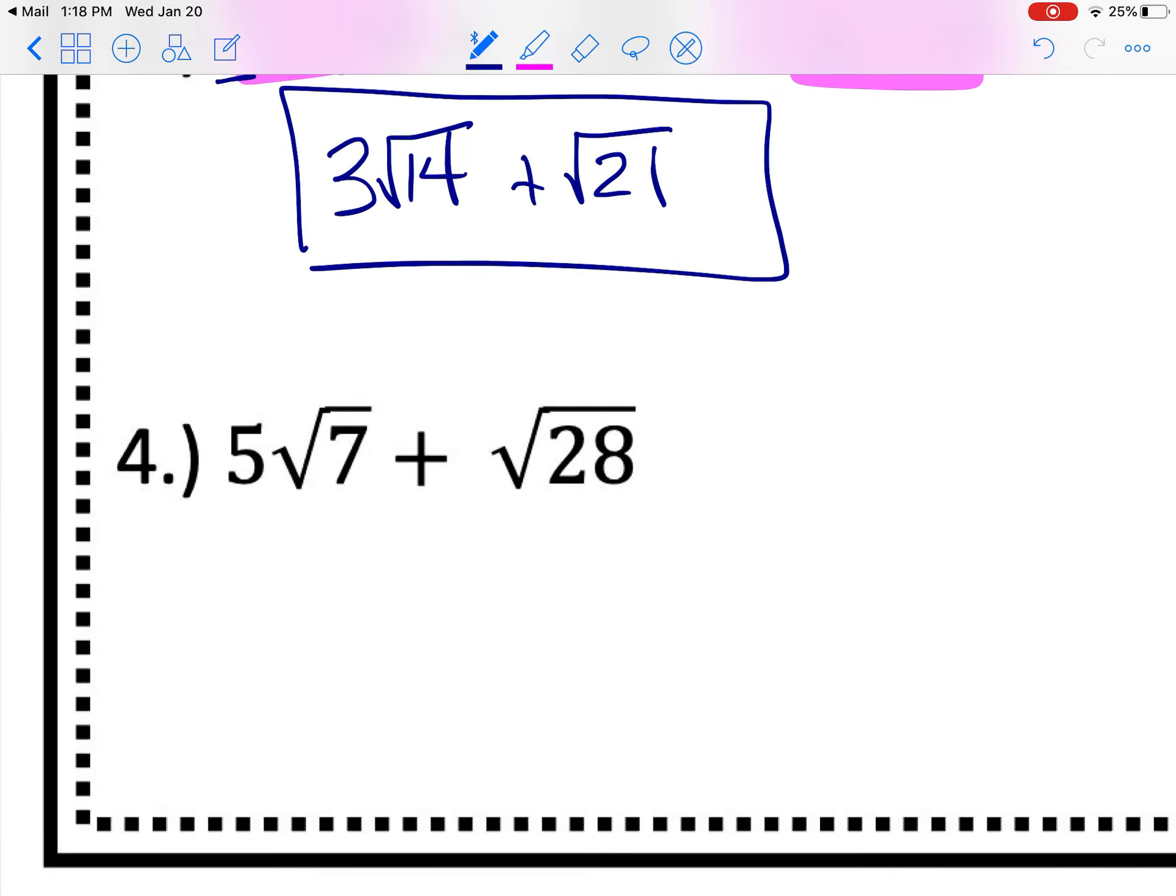So now let's look at this one. 7's already prime, so it's not going to break down, but let's look at 28. We know 28, I can do 4 and 7. 4 can be broken down 2 and 2. Those are all prime. So I know that this is 2 times 2 times 7. There's a pair of 2s, which means I can bring that out. So I know this really is 2 square root of 7. Okay, so let's go back. Actually, I'm going to put that over the square root of 28 and say I don't need that anymore.